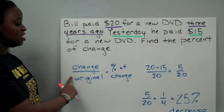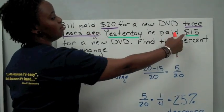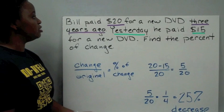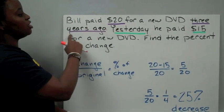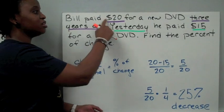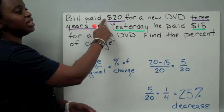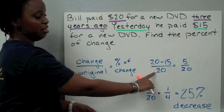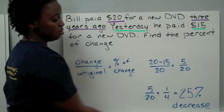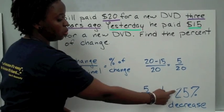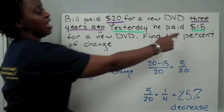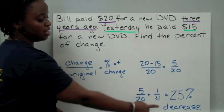So, we know we're looking for the change and the original. Easy. The change, 20 minus 15. The thing that we might have a little trouble with is identifying which one of those is the original. So, Bill paid $20 for a new DVD 3 years ago. Yesterday was $15. Just think about which one came first. Did he pay the $20 first or the $15 first? And since the $20 is the one he paid first, that's going to be our original price that we're going to put on the bottom. Okay? So, our amount of change, 20 minus 5 is a change of 5 over the original of 20, which can be simplified to 1 fourth and we know that 1 fourth is 25%. Again, identify whether it's an increase or a decrease. So, since we started at 20 and we went down to 15, that means we've got a 25% decrease.